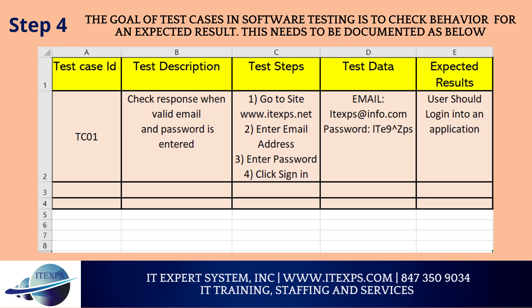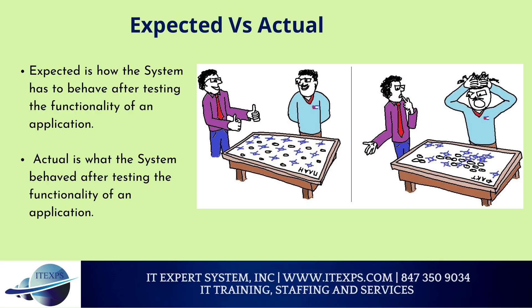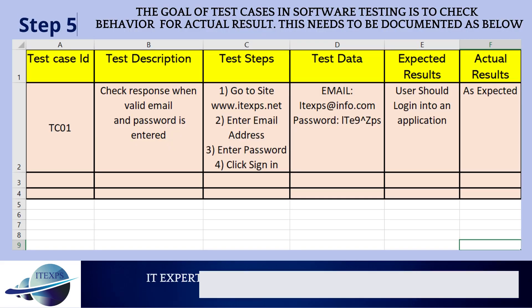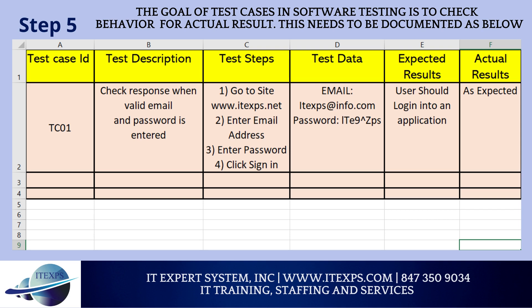Now during test execution time, the tester will check expected results. Let's see what expected results versus actual results is. Expected result is how the system must behave after testing the functionality of an application. As per the example, we can see that actual results are matched with expected results.